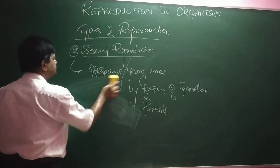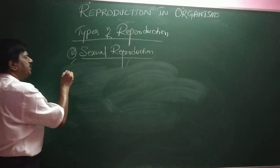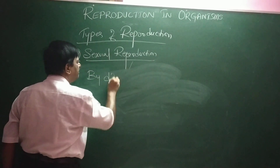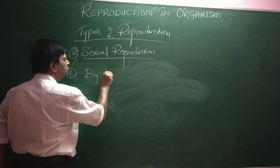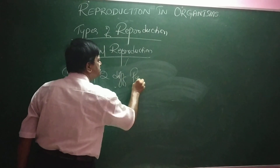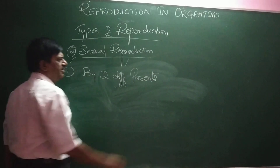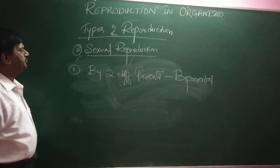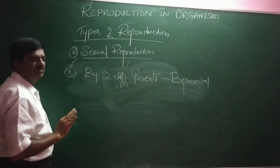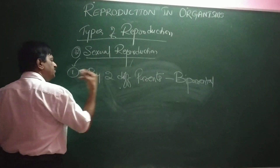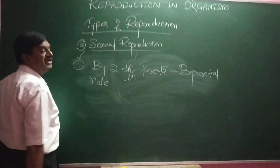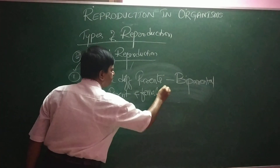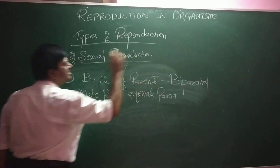Sexual reproduction always takes place by two different parents. Hence, it is always called biparental. In the majority of cases, one parent is called the male parent and the other is called the female parent.